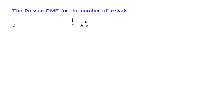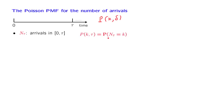The definition of the Poisson process gives us information about the probability that we get k arrivals during an interval of length delta, when delta is a very small number. How can we find the probability of k arrivals during an interval of some general length tau, where tau is no longer a small number? In particular, we're interested in the random variable N_tau, which stands for the number of arrivals during an interval of length tau, and we wish to find the PMF of this random variable.